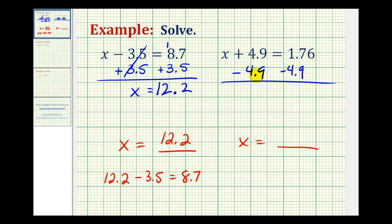So plus 4.9 minus 4.9, that's zero. So we do have just x on the left. And then on the right side, if we want, we can add a zero here in the hundredths place value.